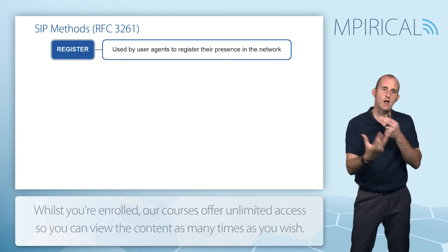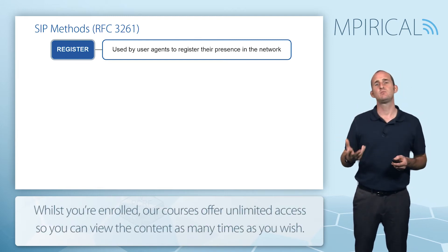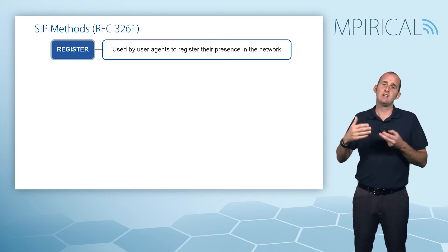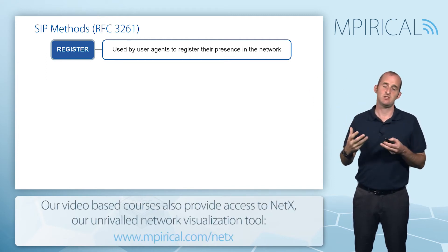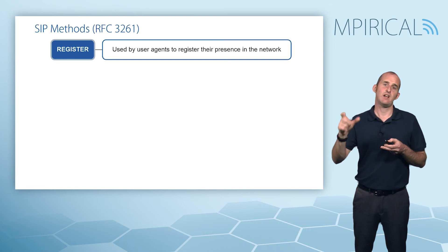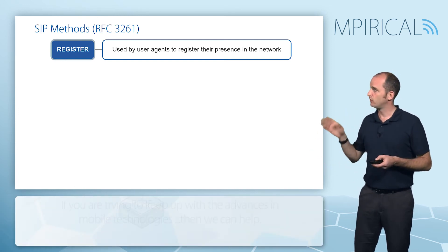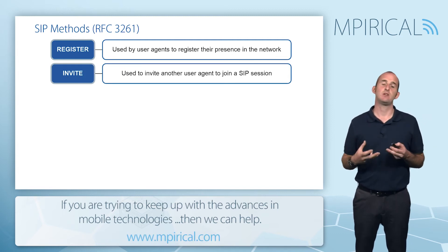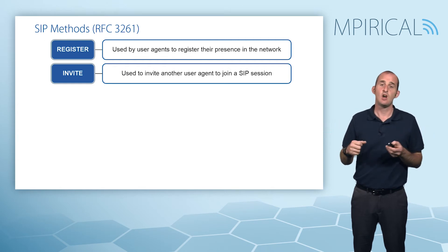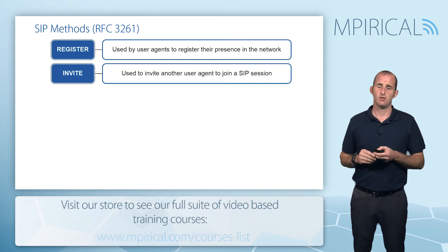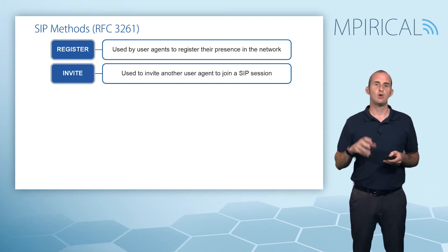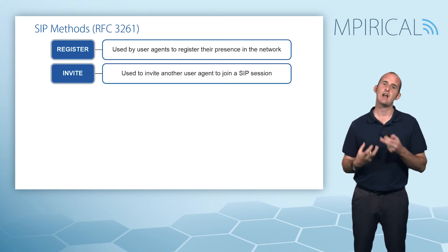The first method you may encounter is REGISTER. This is used by user agents to register themselves on the network — it's not a presence-related thing; it's simply saying to the network 'I'm here and I want to be registered for my services,' allowing the network to create a binding between a particular SIP address and the contact details where that address can be reached. The INVITE method is used to set up a session, which could be between different terminals on an end-to-end basis or between a mobile and an application server. It's ultimately designed to set up a multimedia session, and it's not unusual to see the Session Description Protocol carried in the payload of that INVITE.